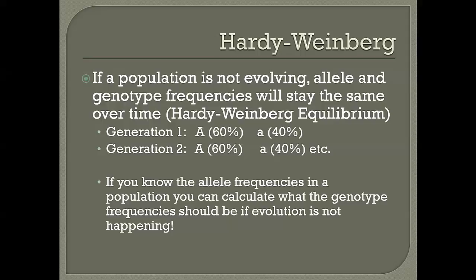Allele frequencies can change in a population — that's the definition of microevolution. The Hardy-Weinberg equilibrium is a tool we use to see if evolution is occurring in a population. If a population is not evolving, the frequencies of alleles and genotypes will stay the same over time.